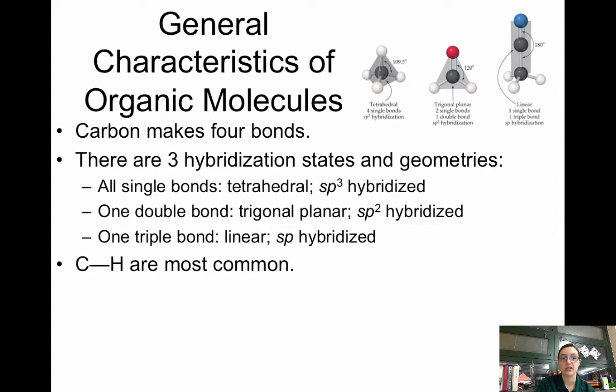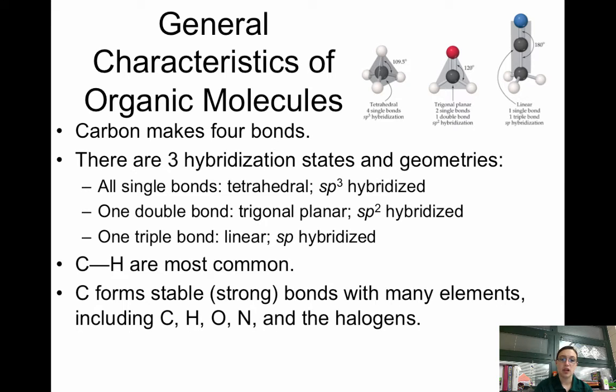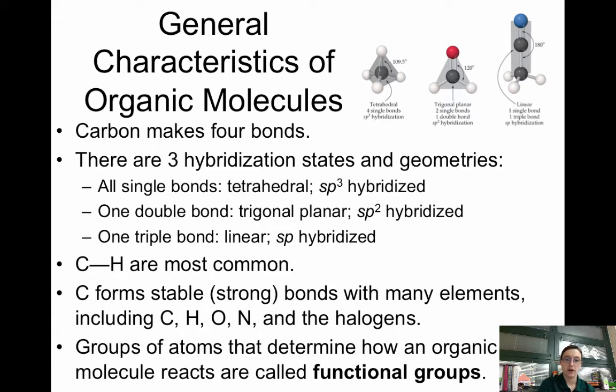Carbon to hydrogen, that single bond, that's going to be the most common. And then carbon can form stable bonds, so pretty strong bonds, with other carbons, hydrogens, oxygens, and nitrogens, as well as the halogens. And then groups of atoms that determine how an organic molecule reacts are called functional groups. And we're going to specifically look at functional groups when we look at naming.